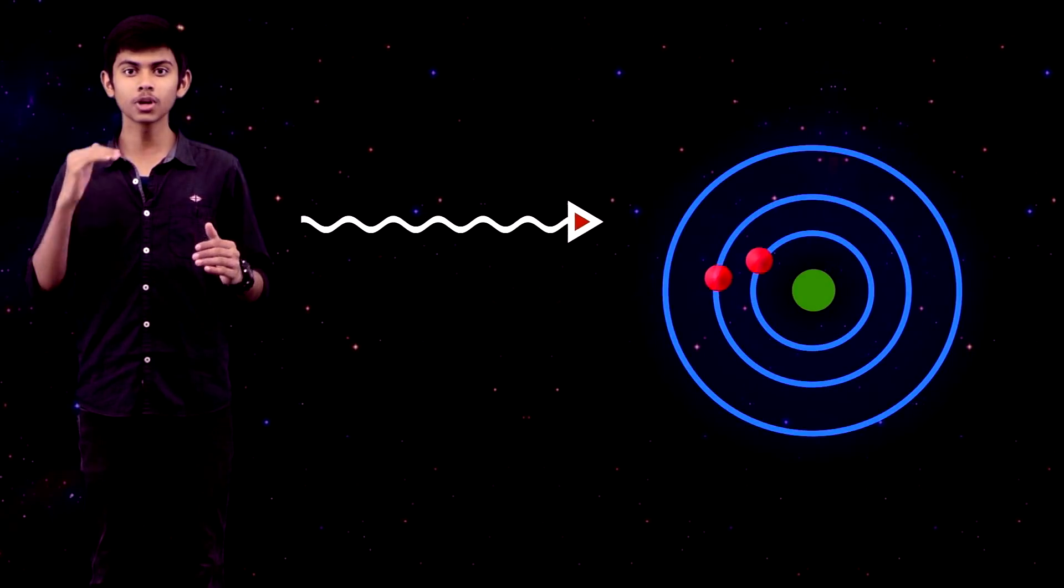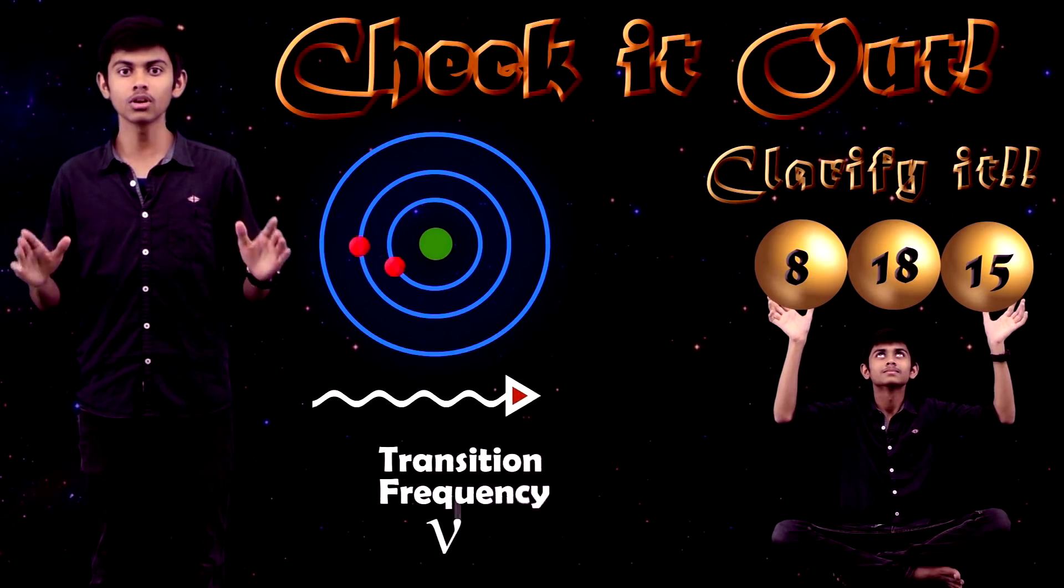For an atom to slow down, it has to collide with and absorb a photon that is coming towards it. And the photon absorbed is used to excite the electron in the atom. The frequency of the light so required to excite the electron is called transition frequency.